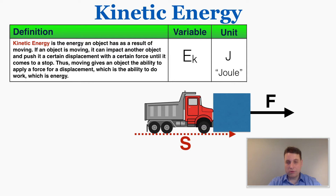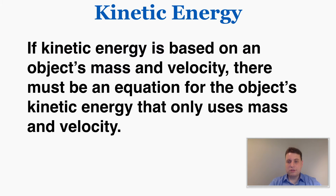The variable for kinetic energy is E subscript k, and the unit is J, or joule — all energy is measured in joules. Based on this definition, if kinetic energy is based on an object's mass and velocity — how quickly it's moving — there must be an equation for kinetic energy that only uses mass and velocity.